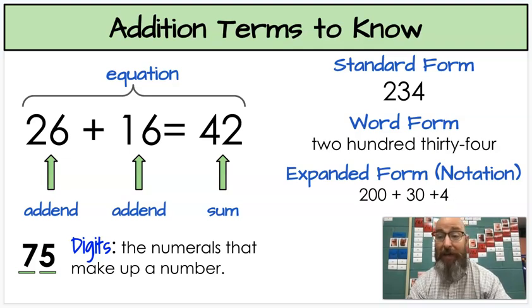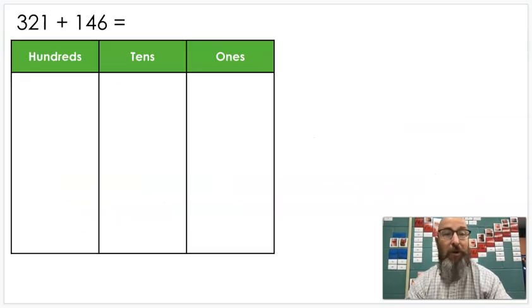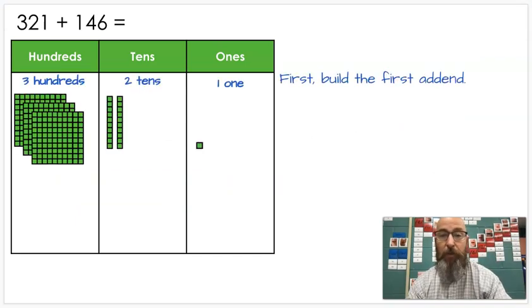So with all that said, let's get started. We're going to practice maybe three or four questions, and then that will be the end. But I just want to make sure I'll walk you through how to do these. All right. We'll start with an easier one first, 321 plus 146. So step one, we're going to build the first addend. We have the number here, 321. So we built three hundreds, one, two, three, two tens. That's your 20 and your one. So that's 321.